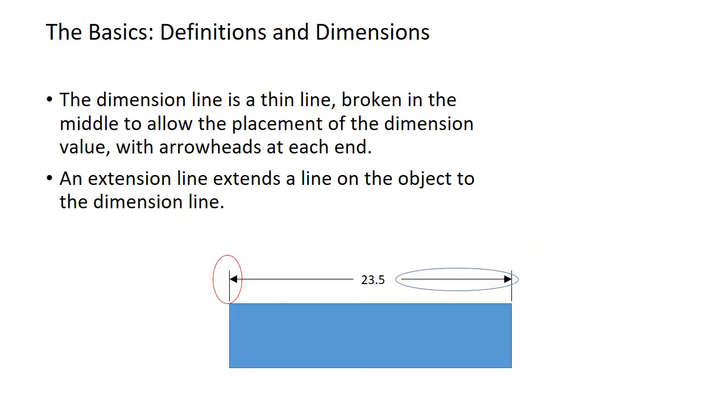The dimension line is a thin line broken in the middle to allow for the placement of a dimension value with arrowheads at each end. An extension line extends a line on an object to the dimension line. Here's yet another example. The extension line is in red. You can see that it doesn't touch the object. And then our dimension line is circled there in blue. It does touch the extension line.